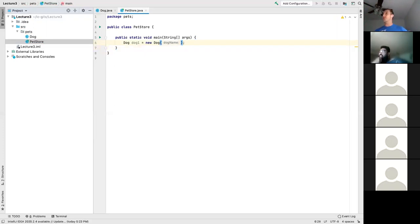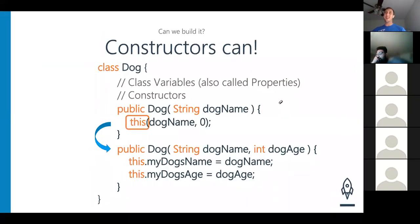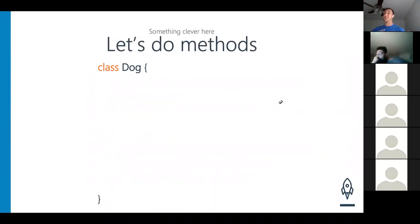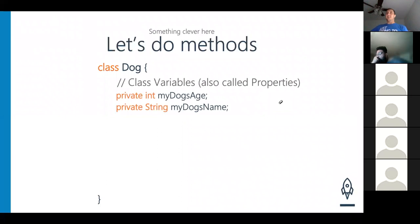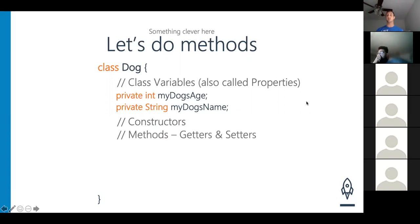We have basically run constructors into the ground. Next up is number three: methods. We have class variables always at the top, then constructors, and finally methods. The particular ones we want to talk about first are methods with getters and setters. As you already know, our class variables are private — end of discussion. They will always be private. So you should always be asking: how do we get access to them? And what if I want to set them to something different? Your answer is getters and setters.